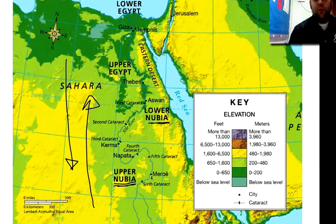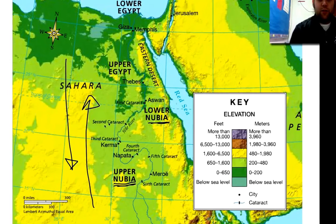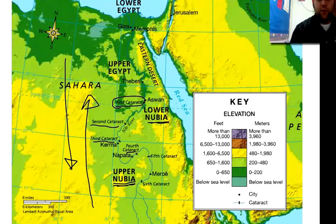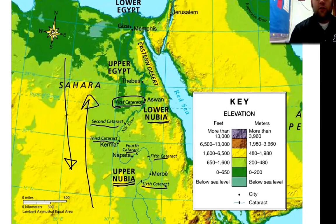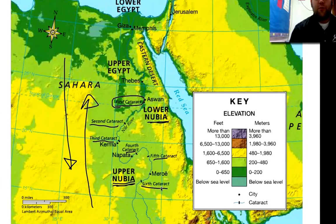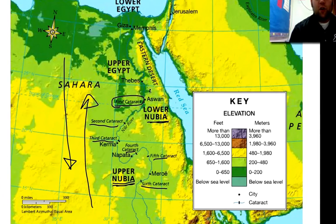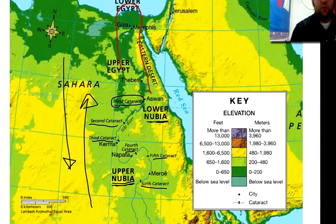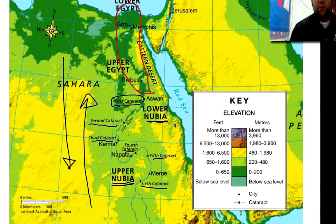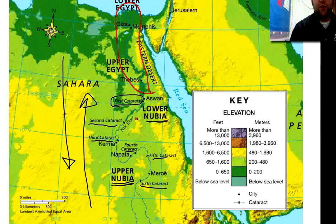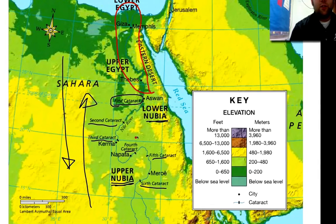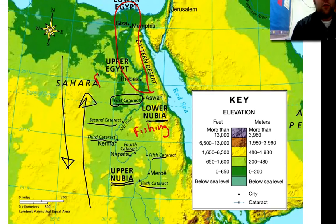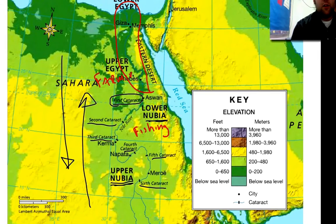One of the main reasons Nubians started off as fishing communities is these things called cataracts. Here's the first cataract, second, third, fourth, fifth, sixth. These cataracts are like giant waterfalls — they basically impede ships from moving up and down the river. So all the boat traffic would actually take place in this region here. They would have boats in between the cataracts but you couldn't get past them. That's why this area is known for fishing, and this is why the other area is known for farming.